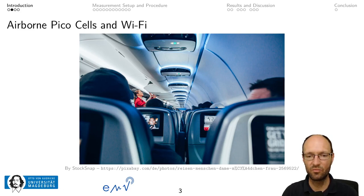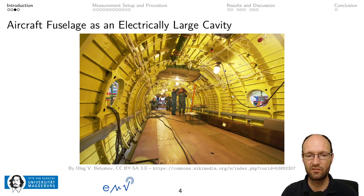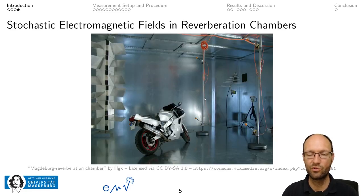The thing with an aircraft is that it has a metallic fuselage which works as a cavity resonator, so we get reflections inside this resonator from the walls. This acts like an electrically large cavity, and the fields within can be described by a statistical theory and replicated in a reverberation chamber. We have such a reverberation chamber in Magdeburg, and our idea was to do measurements there with different leaky cables.